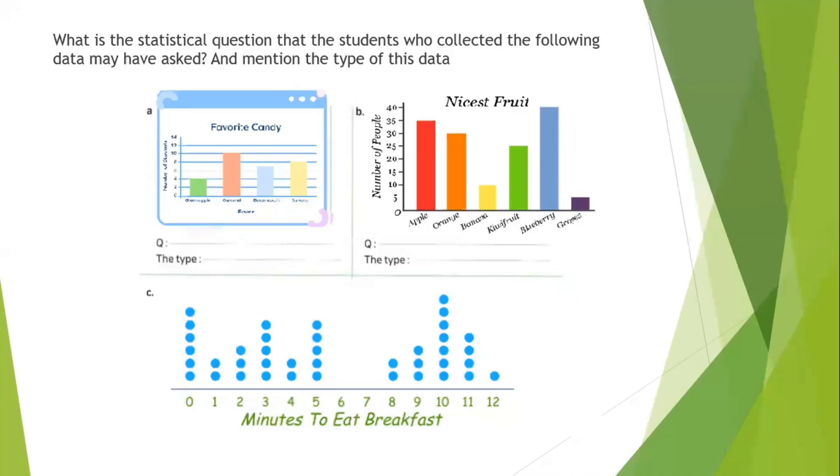What is the statistical question that the students who collected the following data may have asked and mention the type of this data? Number one, this is the favorite candy and this is the number of students. So the question could be: what is the student's favorite candy? What is the type of this question? It's categorical. Number two, this is the types of fruits and this is the number of people. So I can say: what is the best fruit for people? And the type of question is categorical data because I will say the type of fruit, not a number.